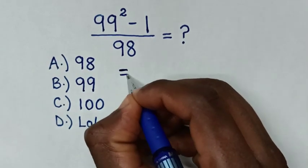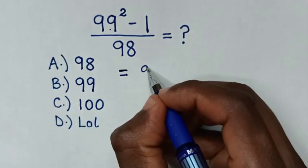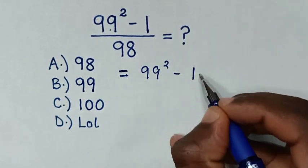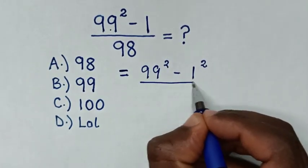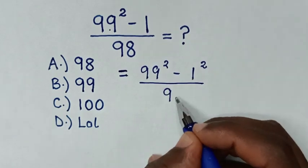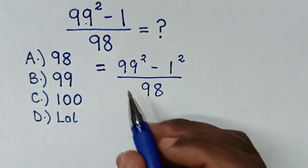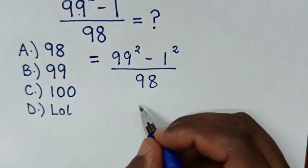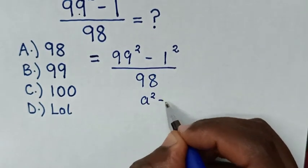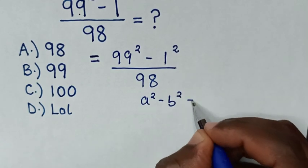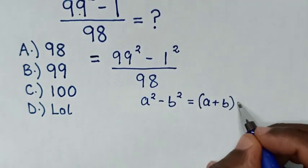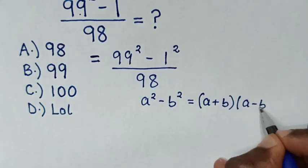It will be equal to 99 square, then minus 1 is same as 1 square, then over this 98. From 99 square minus 1 square is in the form of a perfect square. So we'll apply the rule A square minus B square is equal to A plus B bracket times A minus B bracket.